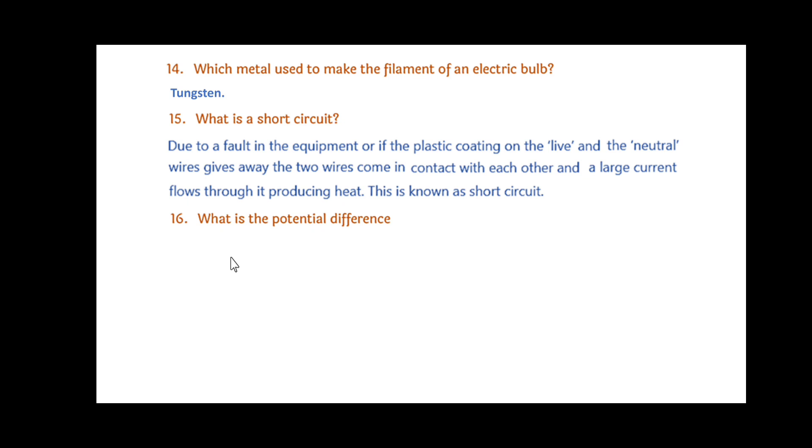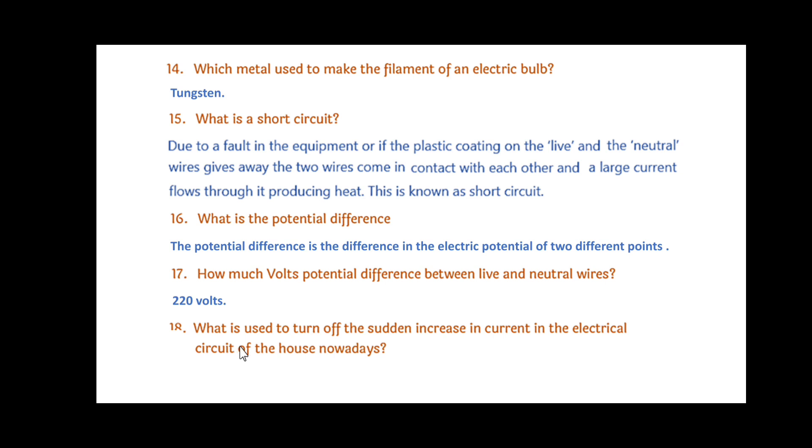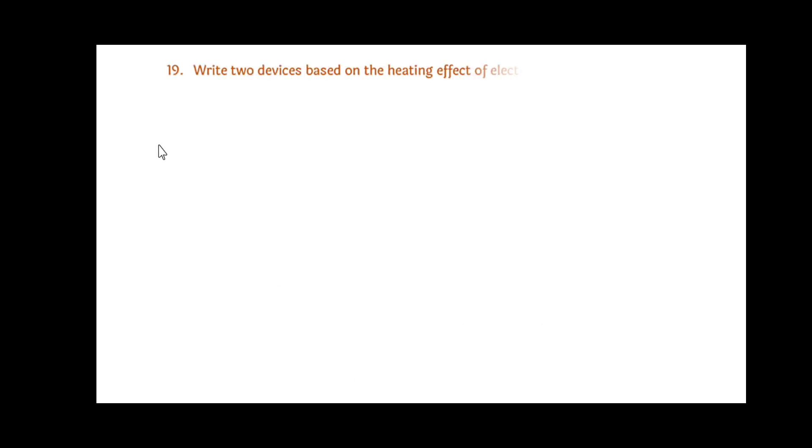What is potential difference? The potential difference is the difference in the electric potential of two different points. How much potential difference between live and neutral wire? 220 volts. What is used to turn off sudden increase in current in the electrical circuit of the house nowadays? MCB, miniature circuit breakers. Write two devices used in the heating effect of electric current: fuse wire, electric heater, electric bulb, electric iron, electric cooker, and geyser.